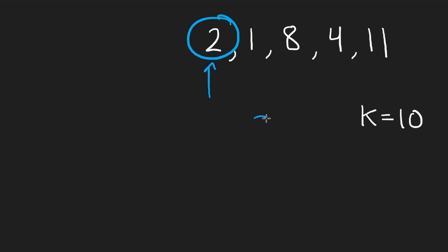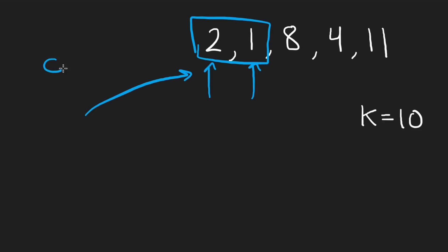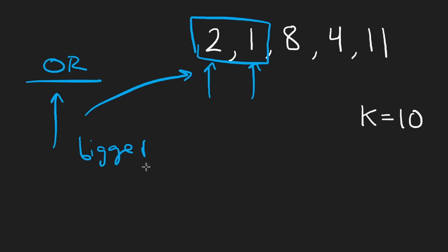We're still looking for a window that is special, and it's important to know this works because OR — like I said at the beginning — is only going to make a number bigger, not smaller. It's only going to set a bit, not unset a bit. So that's another important observation: you have to intentionally make these observations.